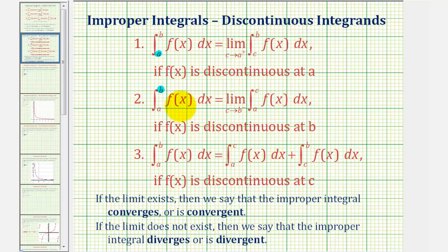And if f(x) is discontinuous at b, the upper limit of integration, we can write the integral as the limit as c approaches b from the left side of the integral from a to c. The third case is when our function f(x) is discontinuous at c, which is inside the interval from a to b, which we can write as two separate integrals and then write these integrals using limits. These types of improper integrals can be a little more difficult to identify.